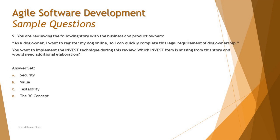Moving on to Question Number Nine, which needs a little more effort to understand. It says: As you are reviewing the following story with the business and product owners — 'As a dog owner, I want to register my dog online so I can quickly complete this legal requirement of dog ownership' — you want to implement the INVEST technique. During this review, which INVEST item is missing from this story and would need additional elaboration?